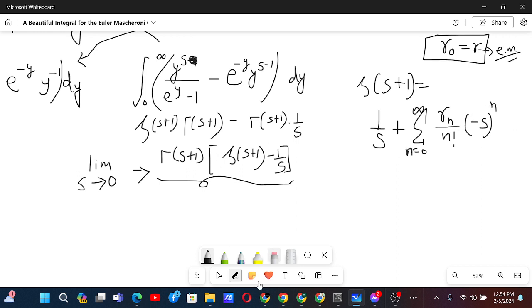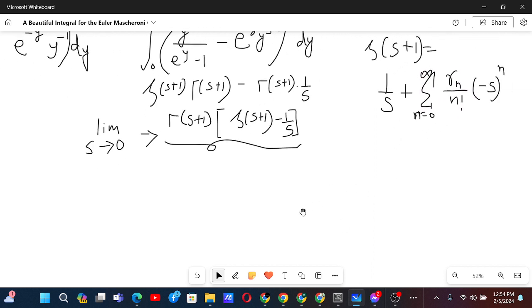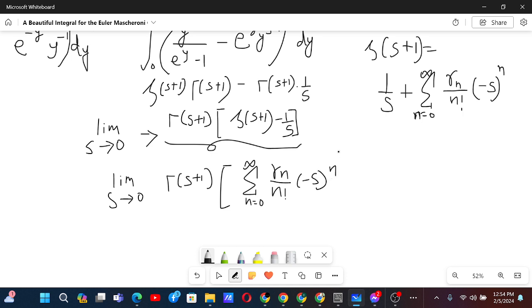Now we want to evaluate this. Not this sum, we want to substitute this sum back in the limit. And then we have limit s tends to 0, gamma s plus 1. And this will be 1 by s will cancel out. So we have sum from n equals to 0 to infinity, Stiltjes constant sub n by n factorial minus s to the power n.